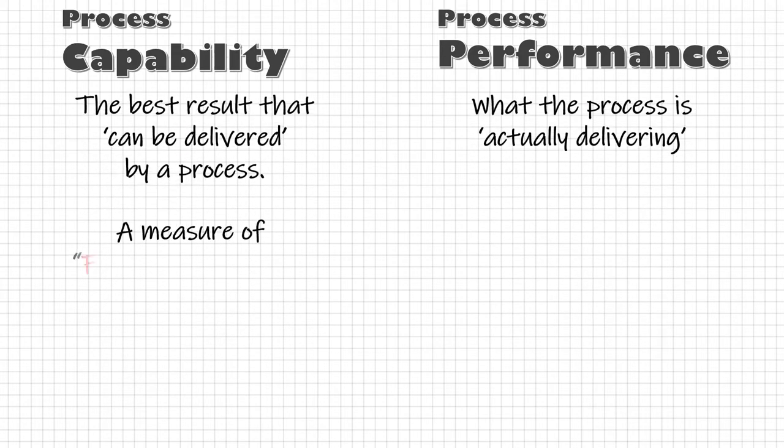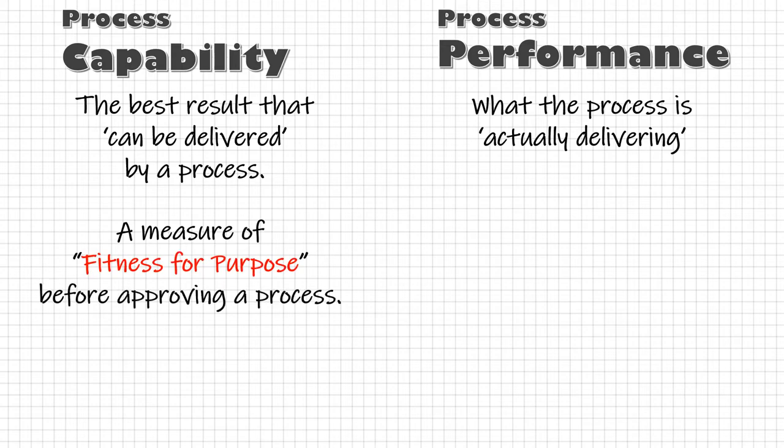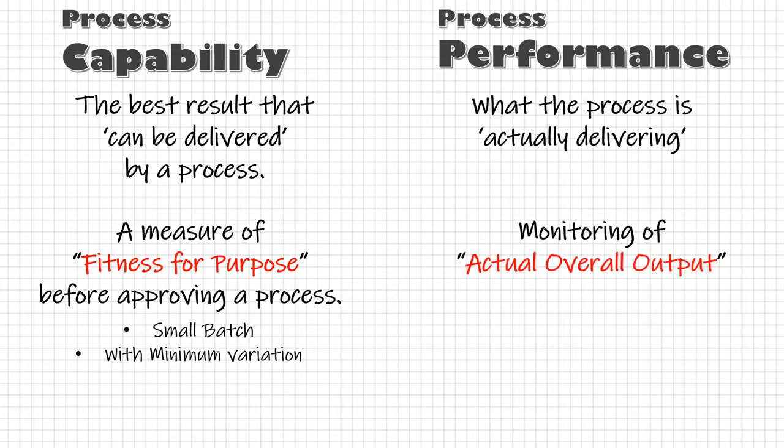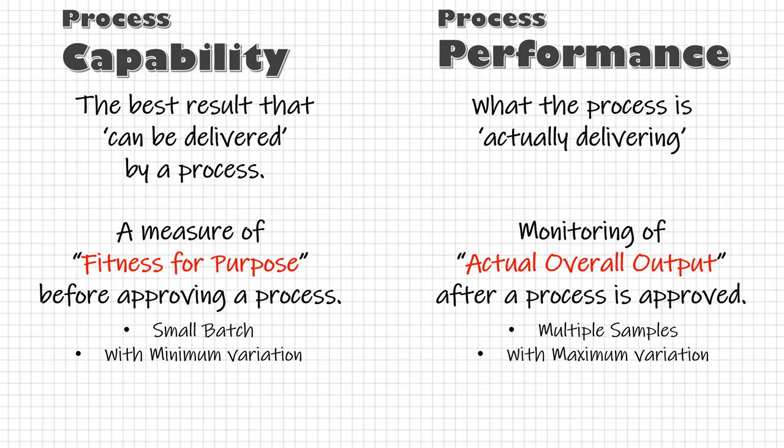Process capability is a measure of fitness for purpose, generally before approving a process. So while calculating process capability, we take samples from a small continuous batch so as to keep the sources of variation to a minimum. And process performance is used to monitor the actual overall output of the approved process. So we take multiple samples over a period of time with all the possible causes of variations.